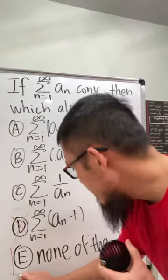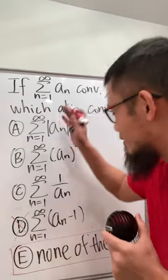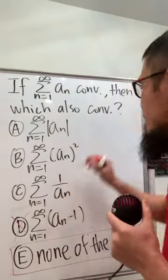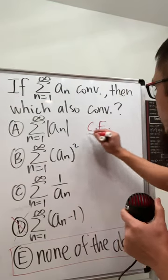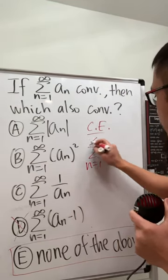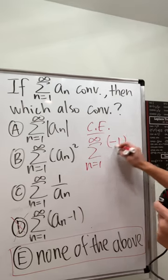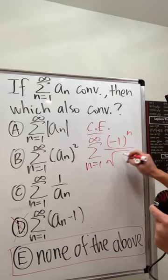The answer is E. None of the choices here converges. I'll give you guys a counterexample real quick. The series from n equals 1 to infinity: negative 1 to the n over square root of n.